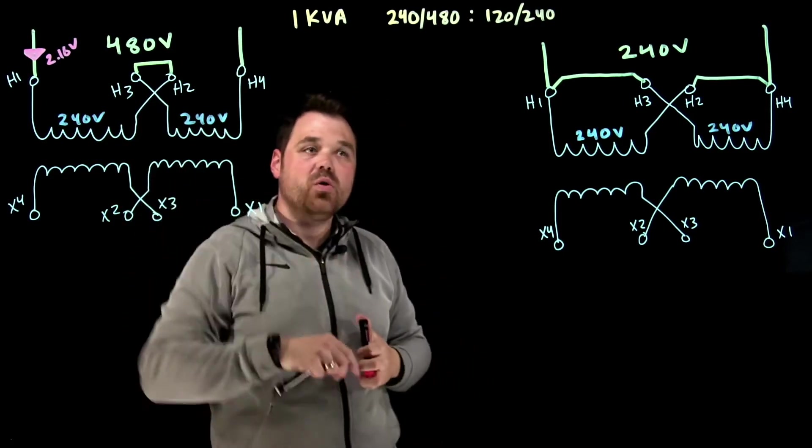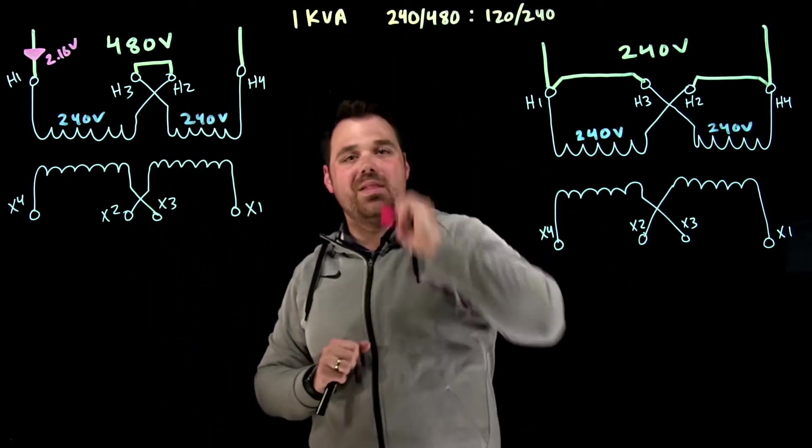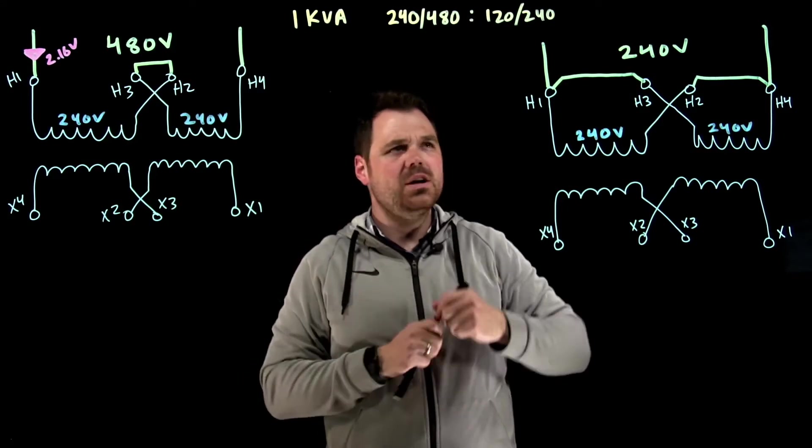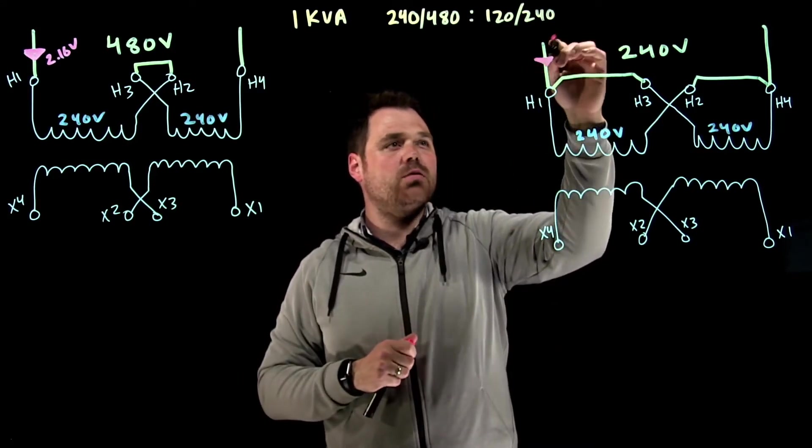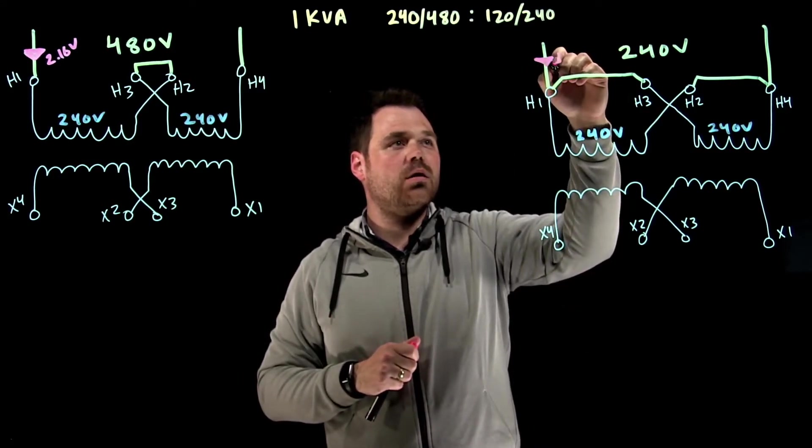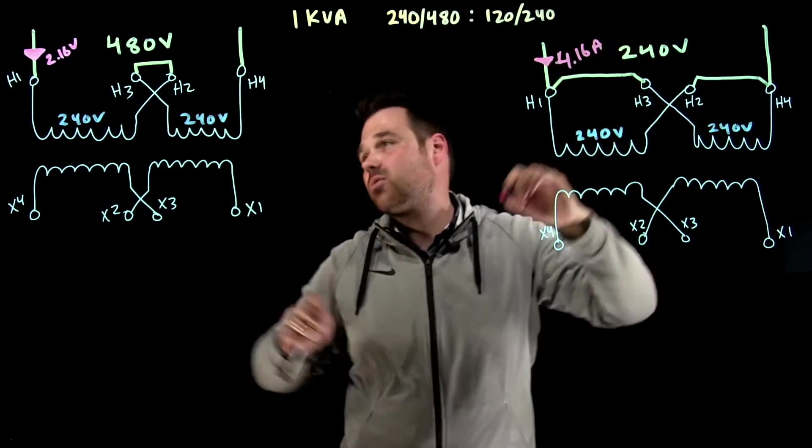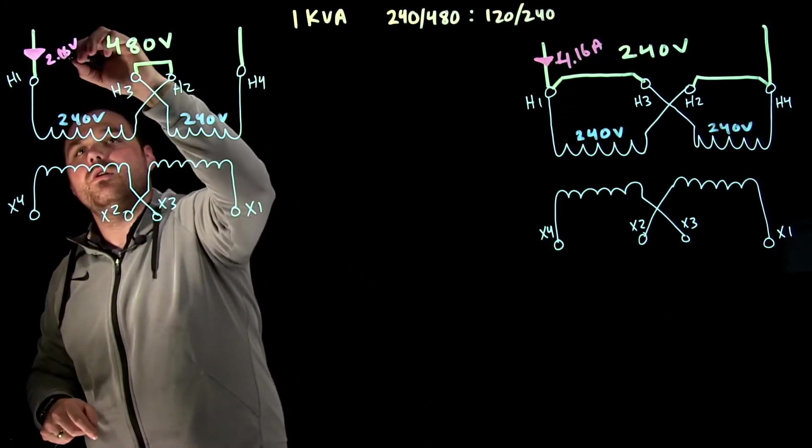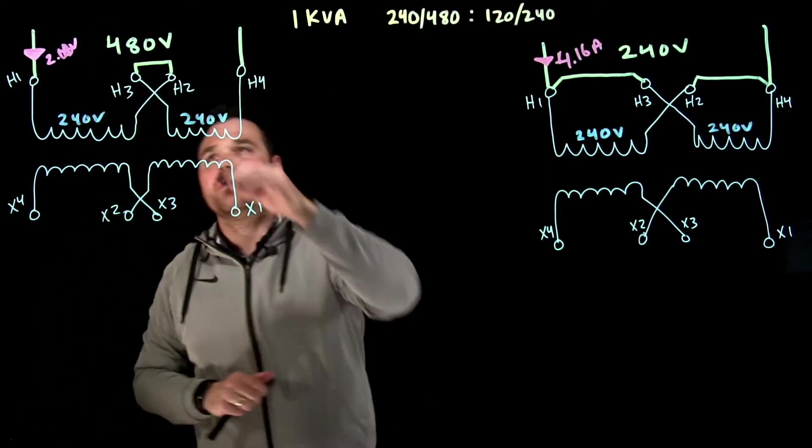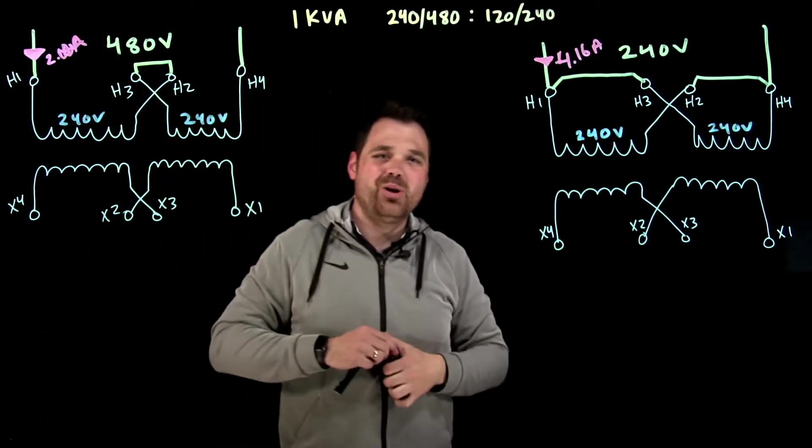through each winding. Well, over here, I would go 1000 VA divided by 240 volts. That's gonna give me about 4.16 amps. Sorry, this would be 2.08 amps. Amps, not volts too. Oh, that was rough. 2.08. However,